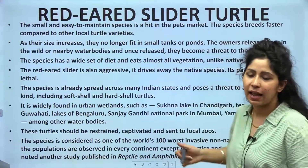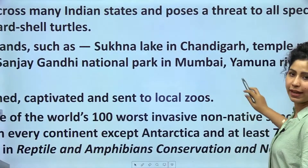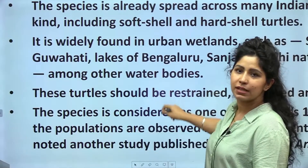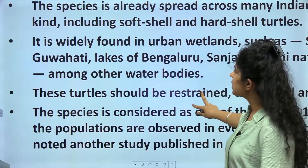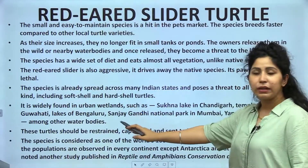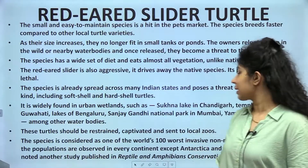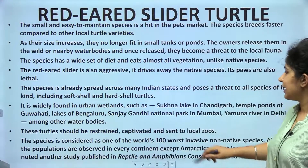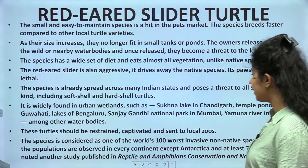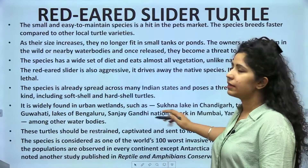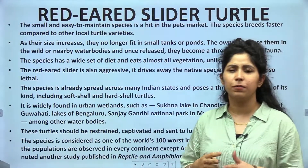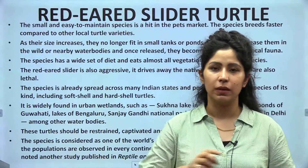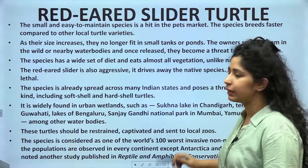These turtles are small and easy to maintain. As an invasive species, they are found in Sukhna Lake in Chandigarh, temple ponds of Guwahati in Northeast India, Bengaluru's lakes, Sanjay Gandhi National Park in Mumbai, and the Yamuna River in Delhi — they are effectively omnipresent in India's water bodies. These turtles should be restrained, captured, and sent to local zoos. It is considered one of the world's 100 most feared invasive species.